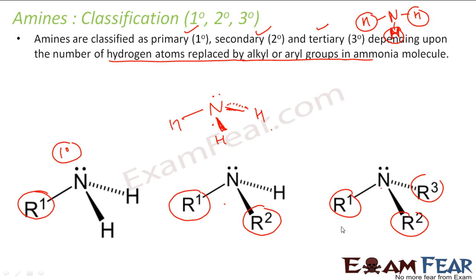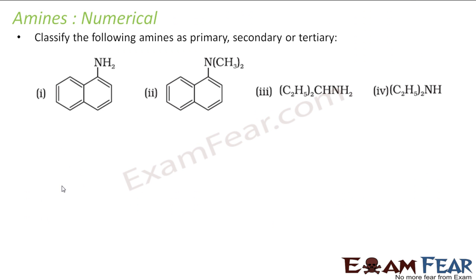To summarize: replace one hydrogen and the compound becomes a primary amine, with one alkyl group and two hydrogens remaining. Replace two hydrogens and you get a secondary amine. Replace three and you get a tertiary amine. Don't count the hydrogens present in the amine itself — always think back to the base ammonia to determine the degree. Let's now work through a numerical example on classifying amines as primary, secondary, and tertiary, starting from ammonia.